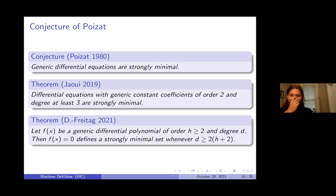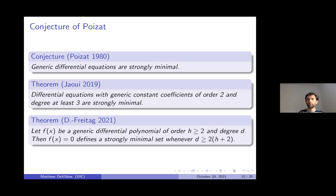Next I'll talk about how we proved this theorem and its implications. The degree bound is: if D is greater than 2 times the order H plus 2, then this equation is strongly minimal.